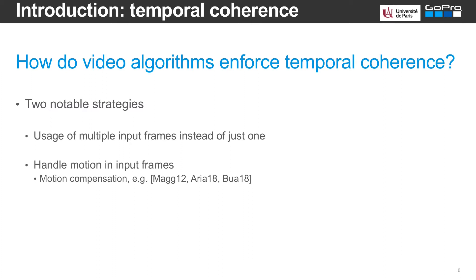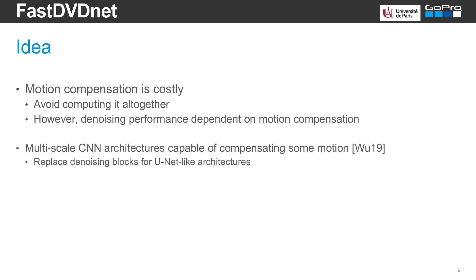So how do we enforce this temporal stability? There are two main strategies. The first one is the use of multiple input frames, and the second one is handling the motion in these input frames. The idea is to align objects in the different frames. Most algorithms explicitly estimate the optical flow to compensate motion. As we will see, our algorithm implicitly handles motion without the need of estimating the optical flow.